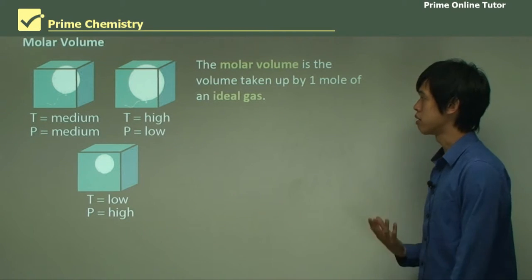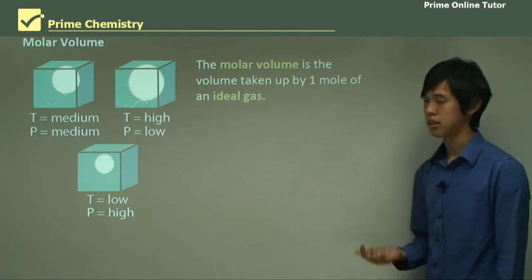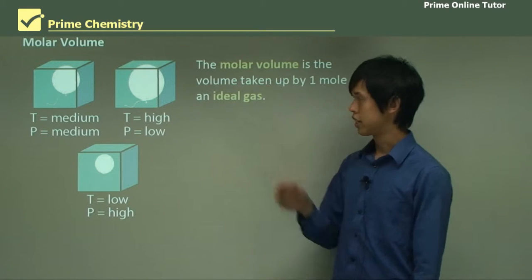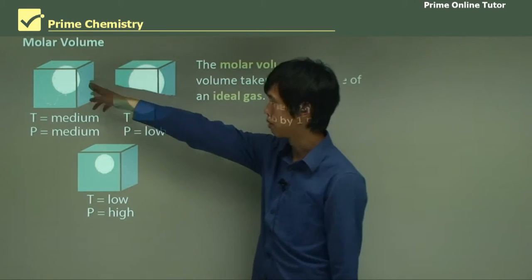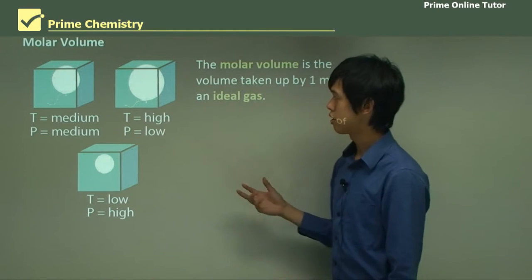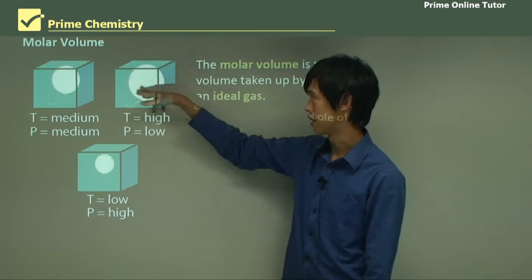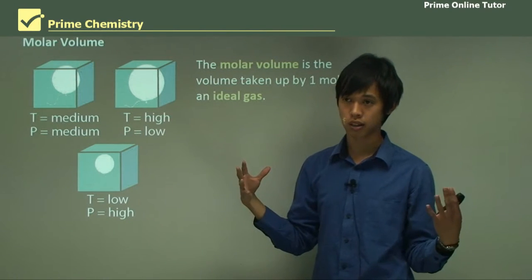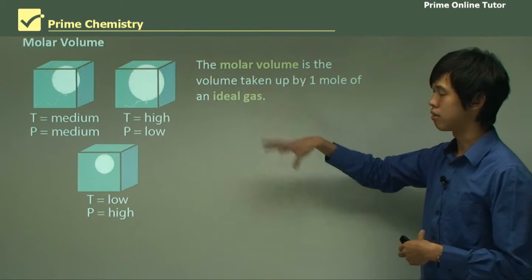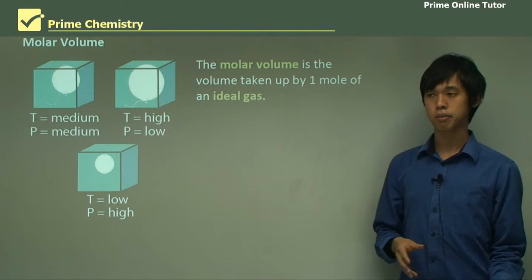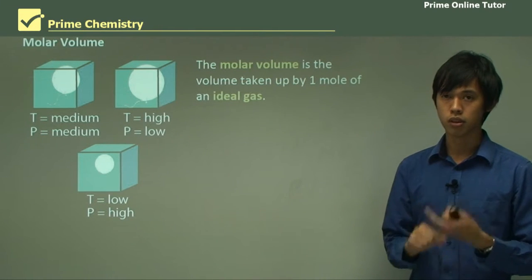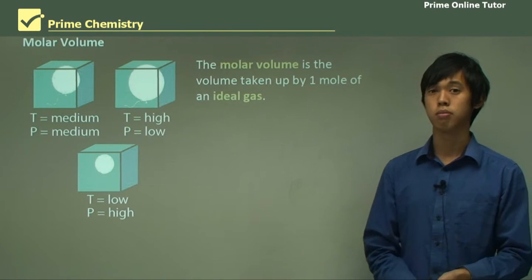So the molar volume is the volume taken up by one mole of an ideal gas. So the molar volume is the space that a gas takes up if there's one mole of it. Now, that obviously can change based on the temperature and pressure. So you can see here our balloon takes up a certain volume. If the pressure and temperature is moderate, then it's this size. Now, if the temperature is very high and the pressure outside is very low, then the balloon will get very big. But if the pressure on the outside is very high and the temperature is very low, the volume will shrink. So you can see that the molar volume changes based on the temperature and pressure.